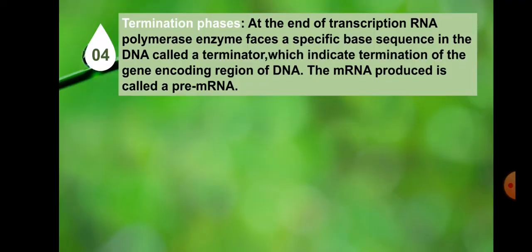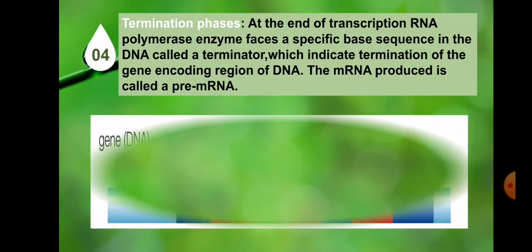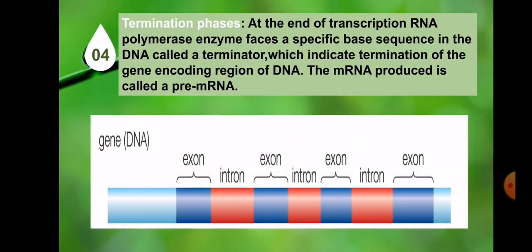Termination phase. At the end of transcription, RNA polymerase enzyme faces a specific base sequence in the DNA called a terminator, which indicates termination of the gene encoding region of DNA. The mRNA produced is called a pre-mRNA. In this slide, you can see the exons and introns.